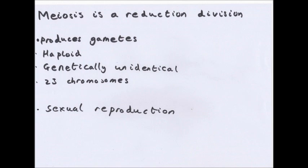This means that you start off with a normal cell which has 46 chromosomes or 23 pairs, and then this number will be halved to just 23 chromosomes. These are haploid cells, they are called gametes. These cells are genetically unidentical, so mitosis produces genetically identical cells, meiosis produces unidentical and this is very important in sexual reproduction.